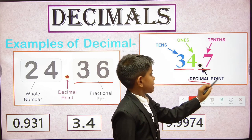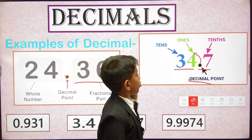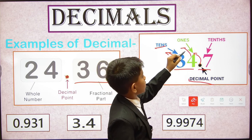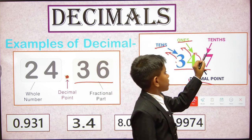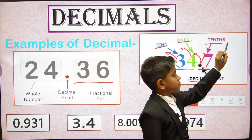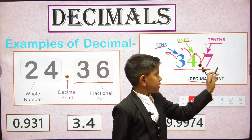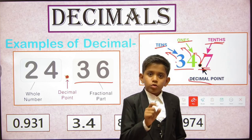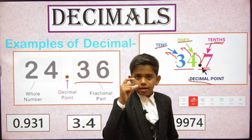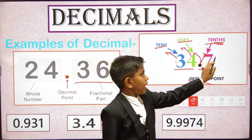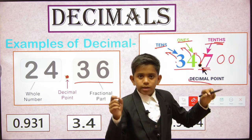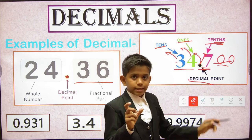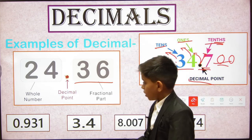Next, we have an example showing the place value of decimals: 34.7. Before the decimal point, 3 is in the tens place and 4 is in the ones place. After the decimal point, 7 is in the tenths place. After tenths, the place values continue as hundredths and thousandths — we add 'ths' to the place name for digits after the decimal point.